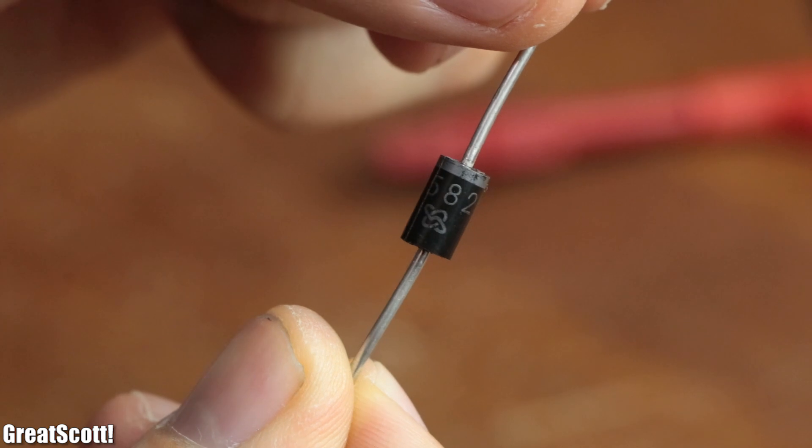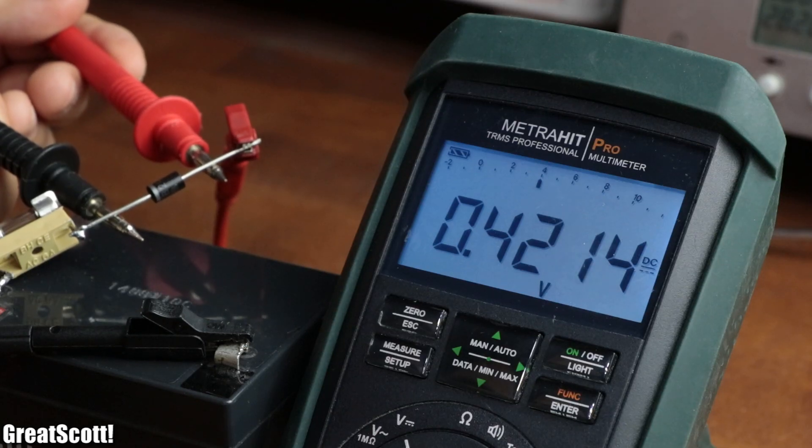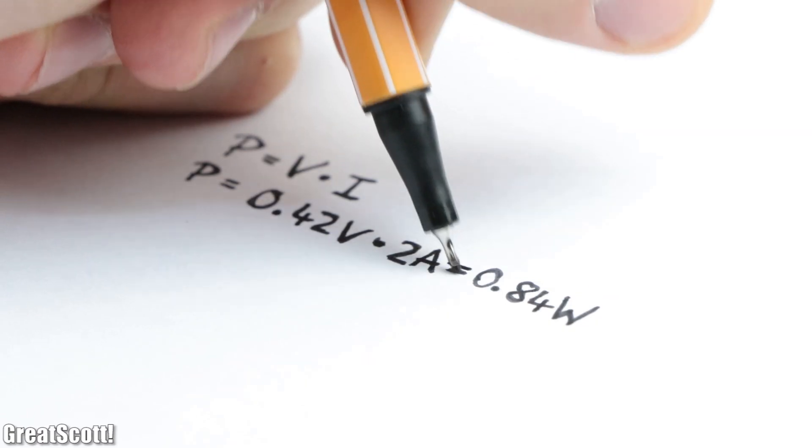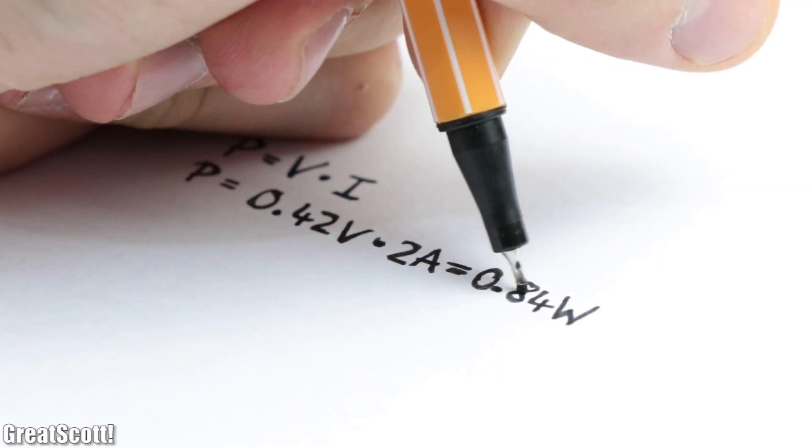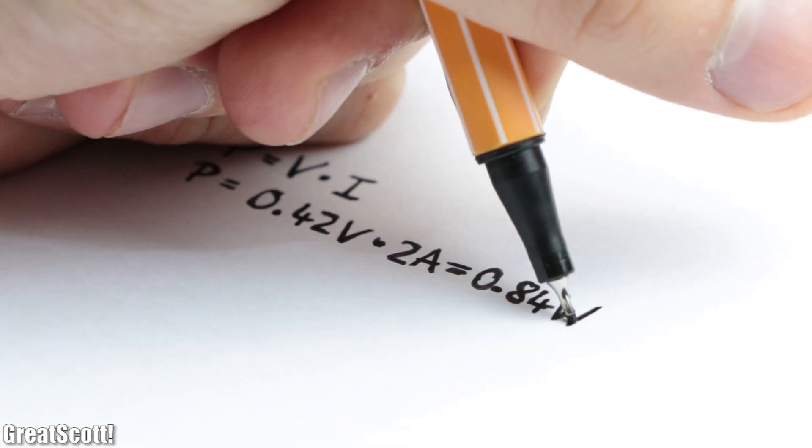The problem is that this Schottky diode, which already features a small forward voltage, still creates a power loss of approximately 0.84 watts at 2 amps in the form of heat.